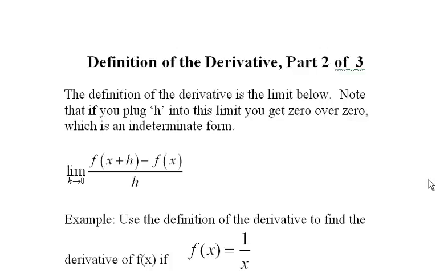The definition of the derivative, part 2. The definition of the derivative is the limit below. Note that if you plug h into this limit, you get 0 over 0, which is an indeterminate form.